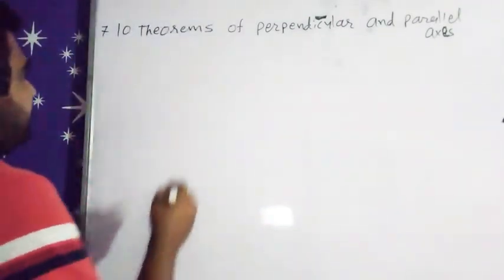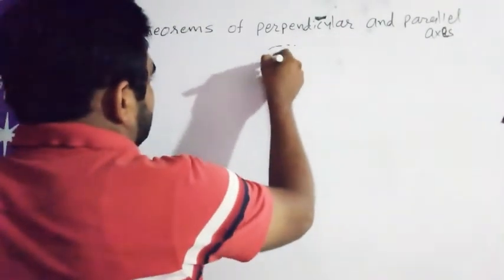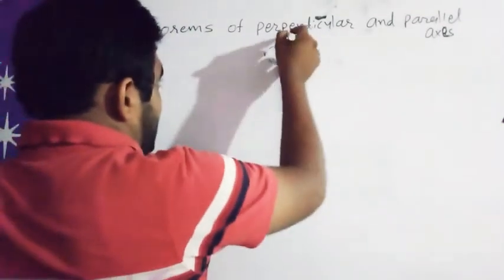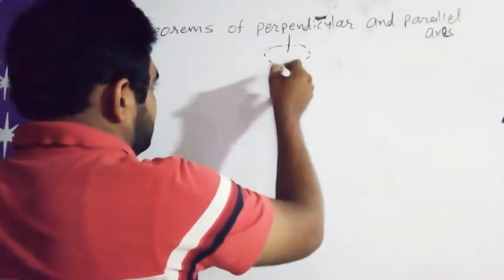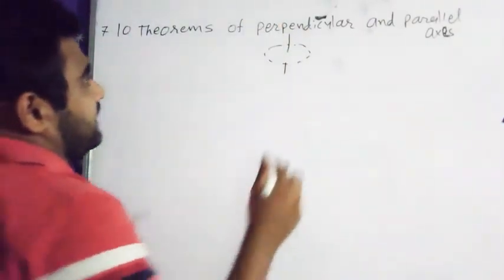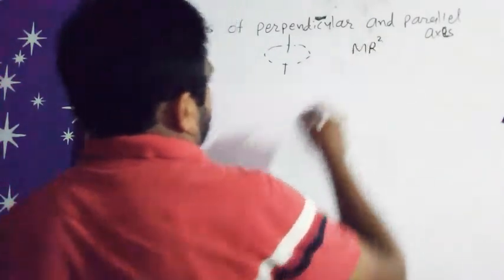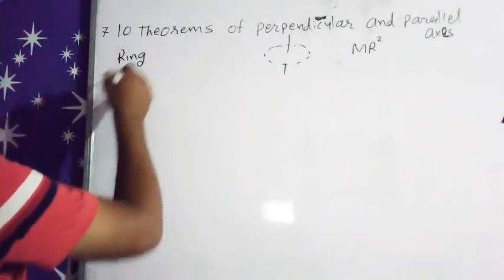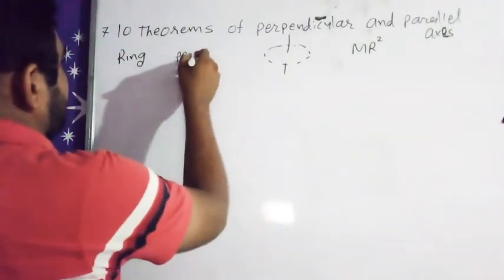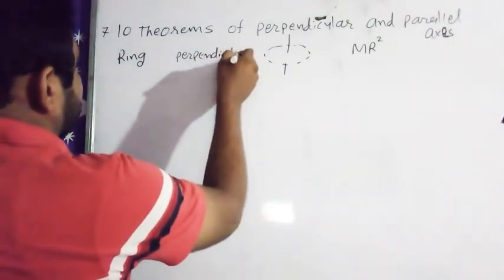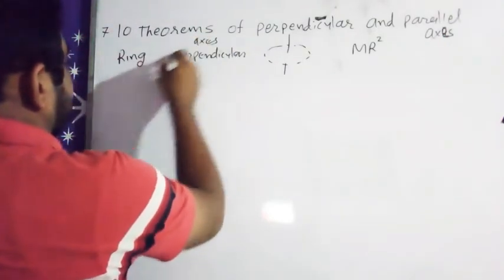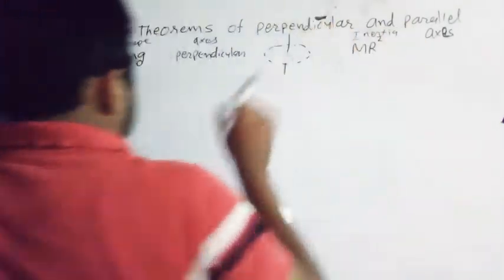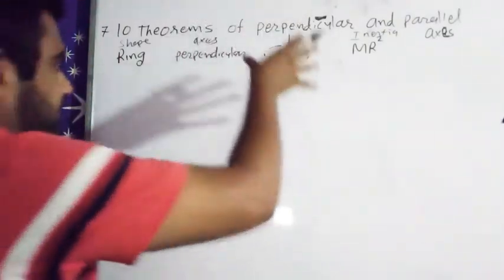First of all, we will talk about a ring which has radius R. If the ring has radius R and its axis is the optical axis, then the moment of inertia will be MR square. So this ring has radius R and the axis is perpendicular. This is inertia, and this is the diagram of the particular object.